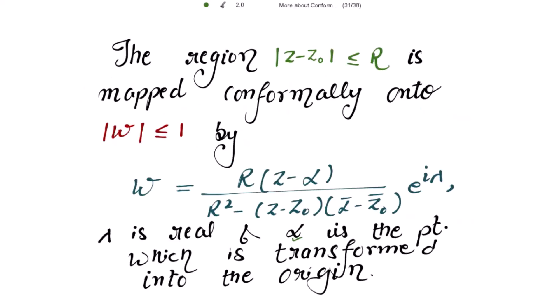The region |z - z₀| ≤ r is mapped conformally onto |w| ≤ 1 by w = r(z - α) / (r² - (z - z₀)(ᾱ - z̄₀)) · e^(iλ). We have to prove this transformation, where λ is real and α is the point which is transformed into the origin — that is, the center of |w| ≤ 1 — and α is a point in the interior of this circle. Let's start with the proof.